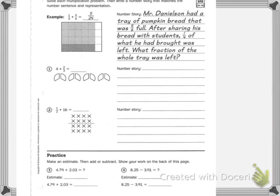The example is 1 fourth times 5 sixths, which equals 5 twenty-fourths. You can see the 5 right here that are shaded darker than the rest out of the 24. If I change my marker, I have 1 fourth — it's split into fourths, and here would be my 1 fourth.